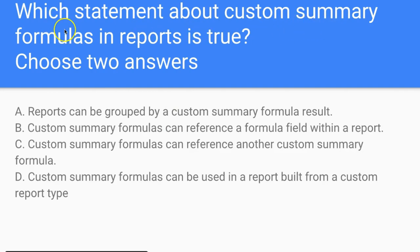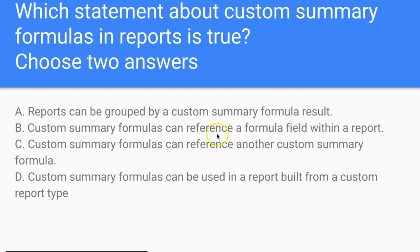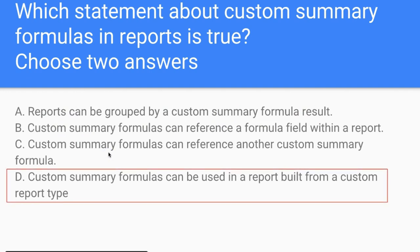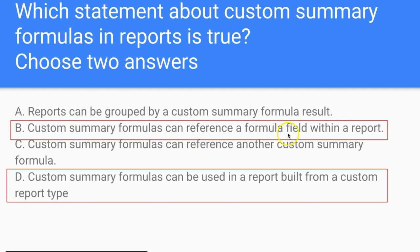Question: Which statements about custom summary formulas in reports are true? Choose two. A: Reports can be grouped by a custom summary formula result. B: Custom summary formulas can reference a formula field within a report. C: Custom summary formulas can reference another custom summary formula. D: Custom summary formulas can be used in a report built from a custom report type. The correct answers are D and B — they can be used in custom report types, and summary formulas can reference a formula field within a report, meaning a value in one field can influence the custom formula result.